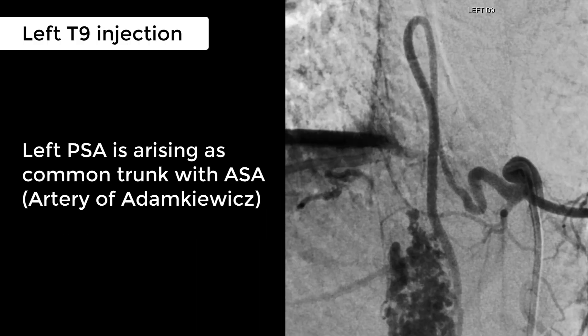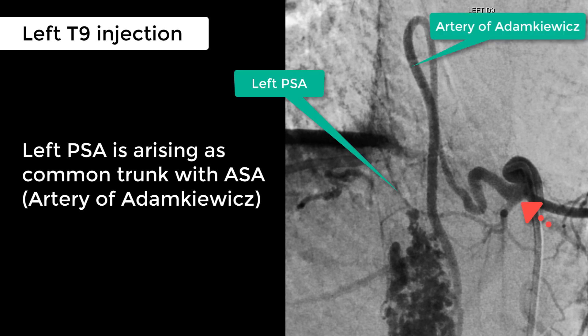Left T9 intercostal injection also showed origin of the left posterior spinal artery arising as a common trunk from the artery of Adamkiewicz. The left posterior spinal artery, however, is not supplying the AVM.